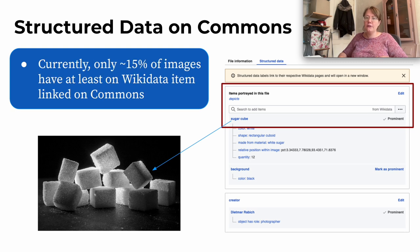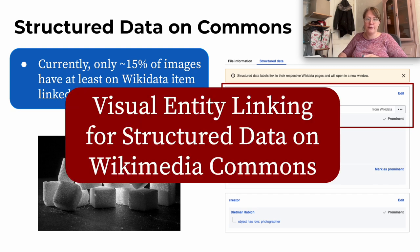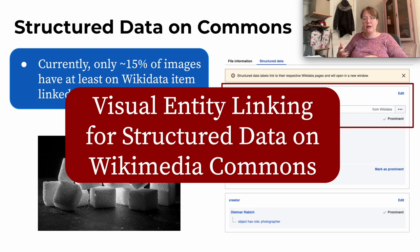Currently, only 15% of images have at least one Wikidata item linked on Wikimedia Commons. So there is a huge lack of structured data available on Commons nowadays. This is where our approach of visual entity linking for structured data on Wikimedia Commons comes in — we want to support the community by automatically creating more structured data.